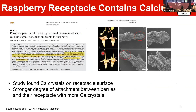Regarding receptacle calcium content, we found a paper showing calcium crystals in the receptacle. There appears to be a strong degree of attachment between the berries and the receptacle where more calcium crystals are found. We can do further analysis using techniques like Doppler testing, as this paper found crystals of calcium in the receptacle.